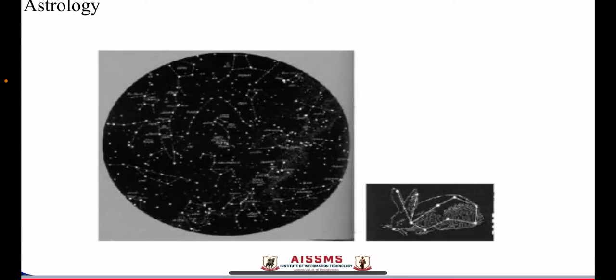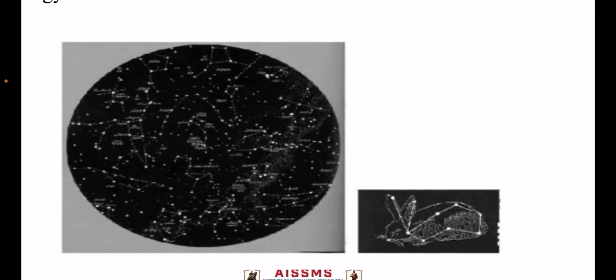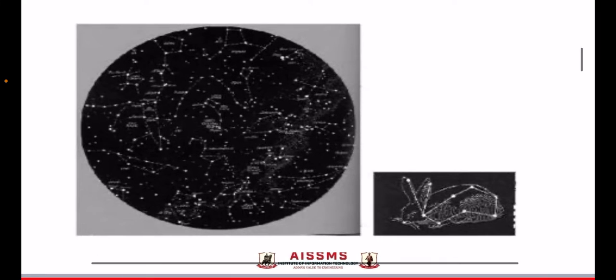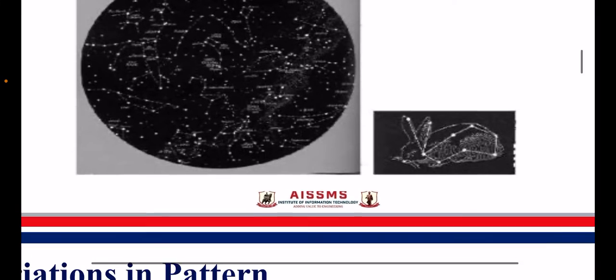When we observe the sky at night, we observe some pattern of that sky, some figure or diagram created because of that pattern in the night. Here, the rabbit-like shape is created by the stars in the night. We observe that rabbit as a pattern in the sky.